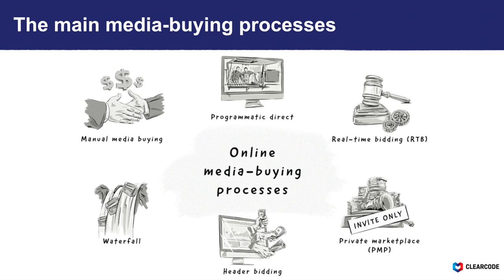Although RTB helped publishers sell remnant inventory on the open market, many premium publishers found they were losing money on their most premium inventory. Advertisers also became concerned they were missing out on premium inventory and that their ads weren't being seen. To overcome these issues, Private Marketplace, or PMP, was born. Private Marketplace is an invite-only variation of the RTB model where publishers offer their most premium inventory to a select number of buyers. Advertisers participating in PMP deals can bid on the available inventory before the publisher offers it in an open RTB auction.